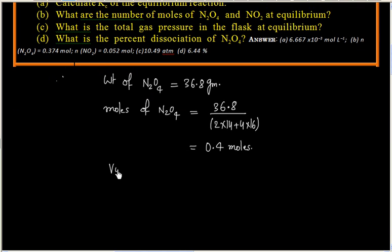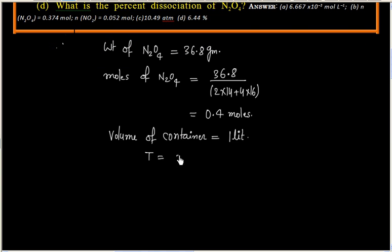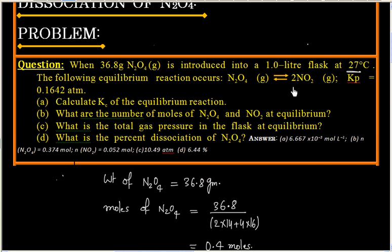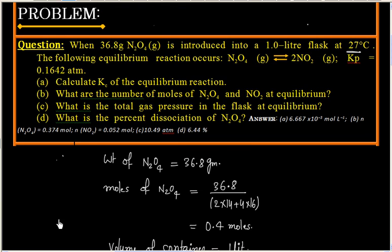Volume is given as 1 liter. Temperature is also given as 27 degrees centigrade, which is 300 Kelvin. We have been given the Kp value for this reaction, which is 0.1642 atmospheric pressure.